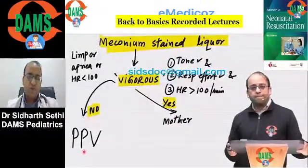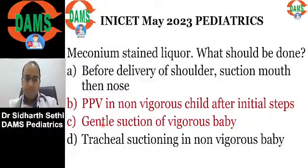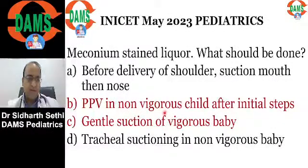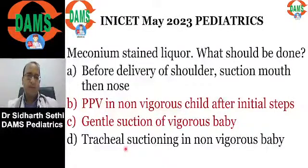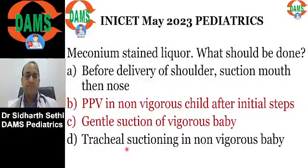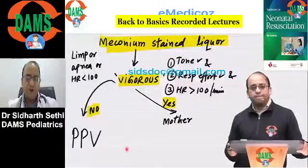If the baby is not vigorous, you go for positive pressure ventilation. Intrapartum suction is no longer done. In a non-vigorous child with meconium-stained liquor, tracheal suctioning is also not done anymore. In the latest American Heart Association guidelines, intratracheal suction was removed. We manage this baby like a routine baby following routine resuscitation indications.